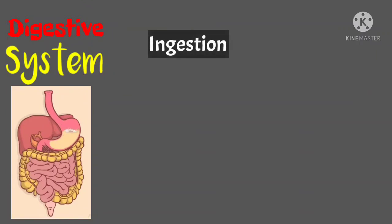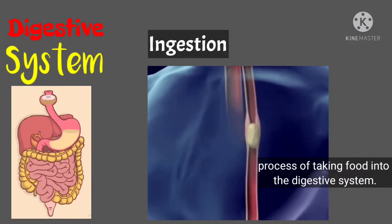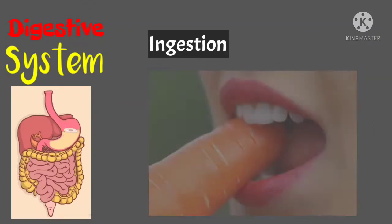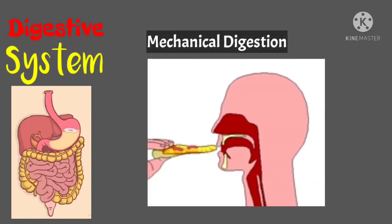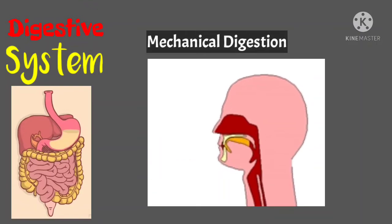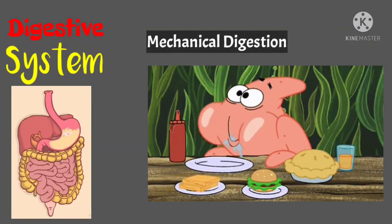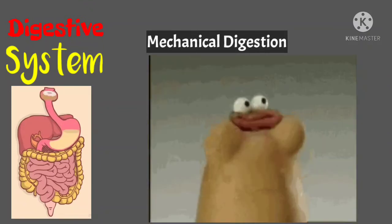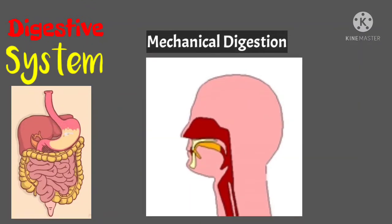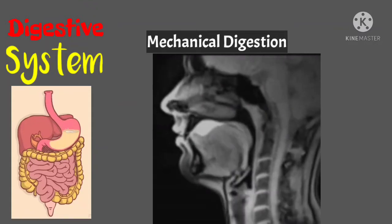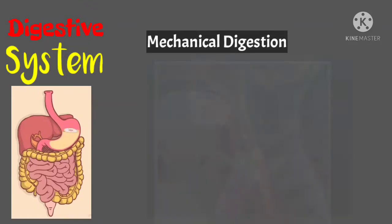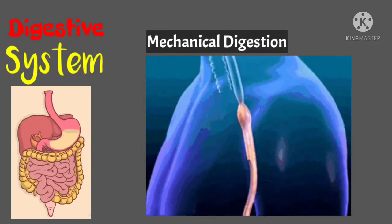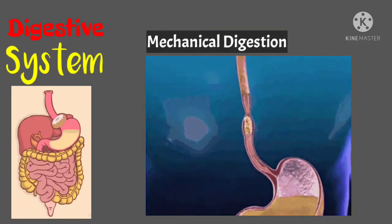Now let's start with ingestion. The process of taking food into the digestive system is what we call ingestion. Our body begins to ingest food into the mouth. The mechanical digestion of food begins in the mouth. Chewing or mastication is the first process — it reduces food to small particles and mixes it with saliva secreted by the salivary glands. When you swallow, your tongue pushes the food into your throat. A small flap of tissue called the epiglottis folds over your windpipe to prevent choking as food passes into your esophagus. After you swallow, peristalsis pushes the food down your esophagus into your stomach.